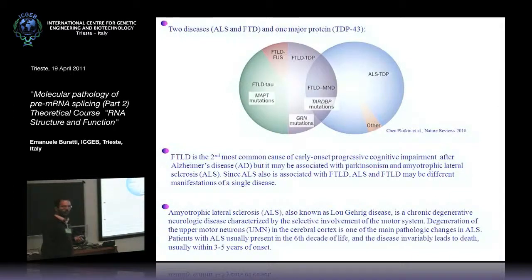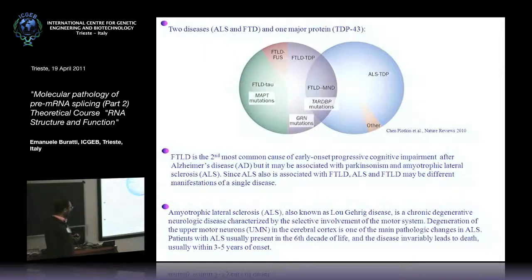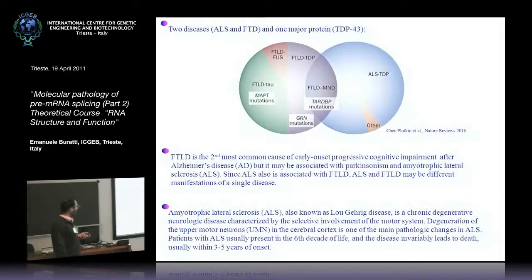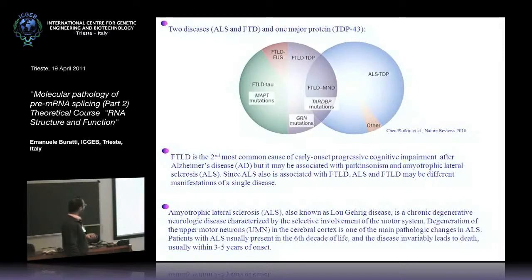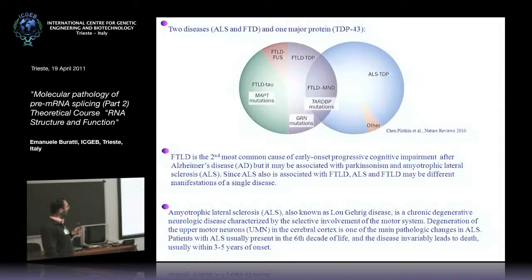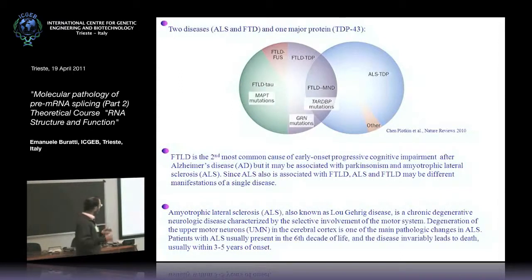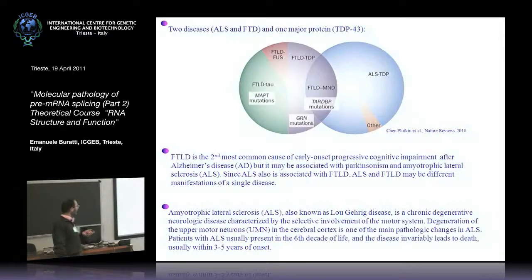In the States, it's also known as Lou Gehrig's disease, from a very famous baseball player who was one of the first people characterized with this disease. It basically involves degeneration of the upper motor neurons, but cognitive abilities are not affected or not much affected. Frontotemporal dementia is the second most common cause of early onset progressive cognitive impairment — essentially dementia — following Alzheimer's disease.